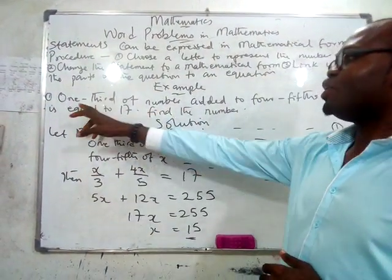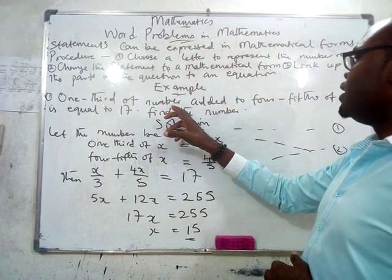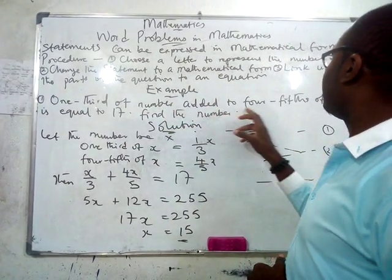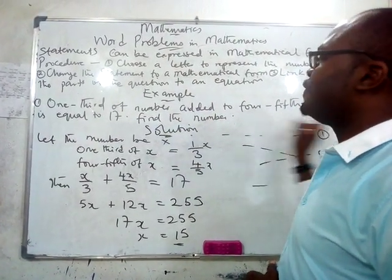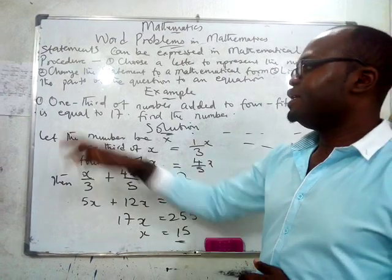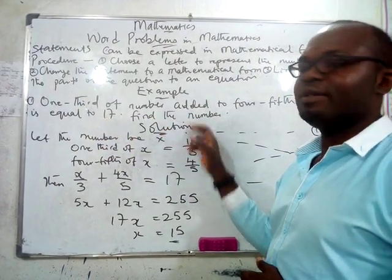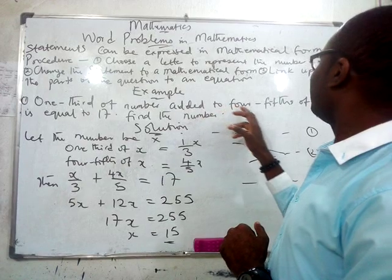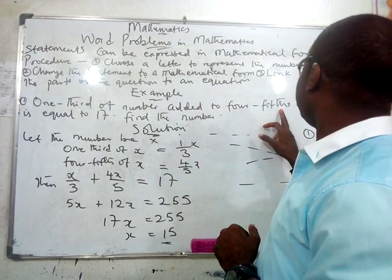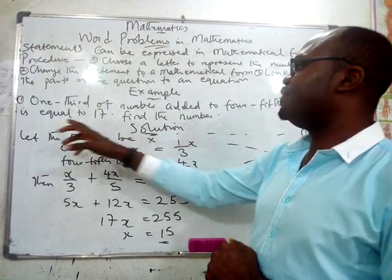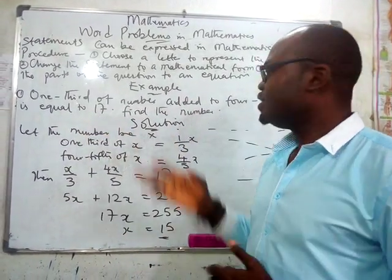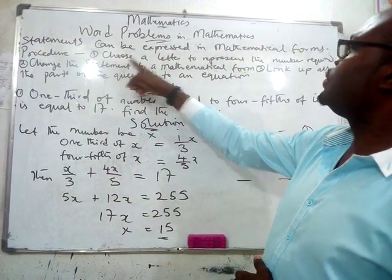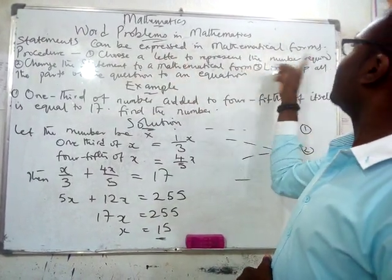Look at this example: one third of a number added to four fifths of itself is equal to 17. Find the number. So to solve this is very simple — the procedure says: choose a letter to represent the number. That's the first thing you do whenever you're solving a word problem.